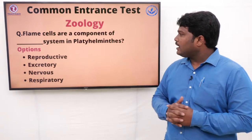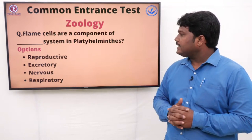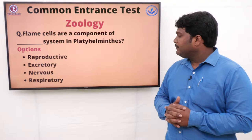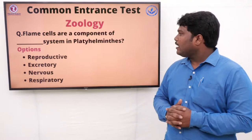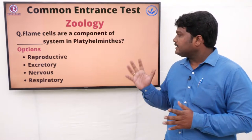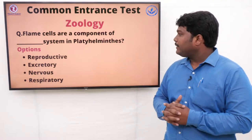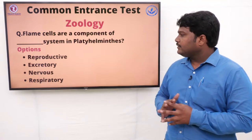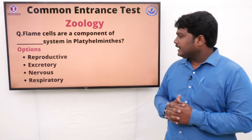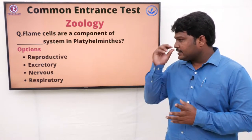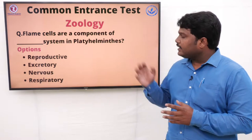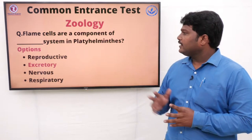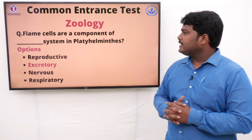Question 27: Flame cells are components of which system in Platyhelminthes? Options: A) Reproductive, B) Excretory, C) Nervous, D) Respiratory system. The right answer is excretory system.